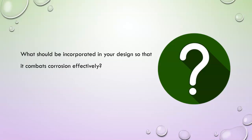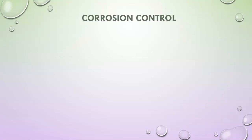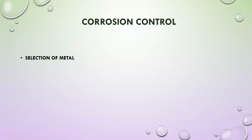If designing is so important, then what should be incorporated in your design so that it combats corrosion effectively? To keep corrosion under control, we have to keep in mind the right selection of metal, we have to consider alloying of metals, and the design of the structure needs to be proper.